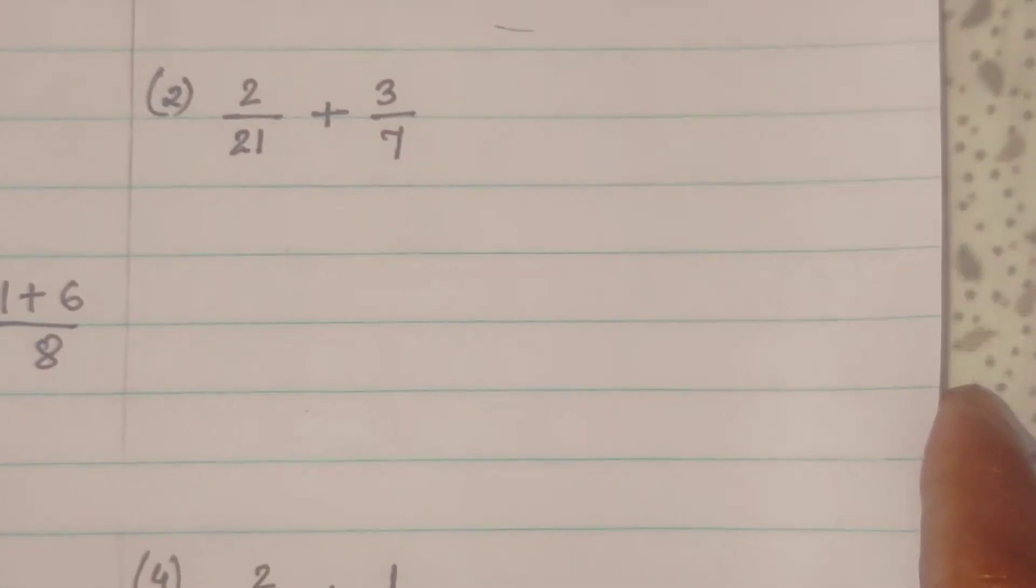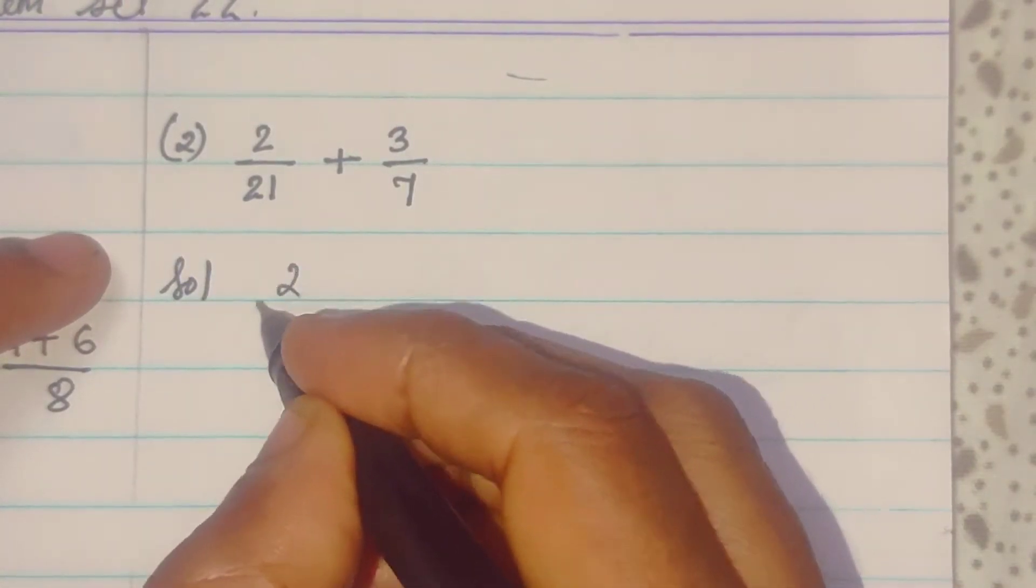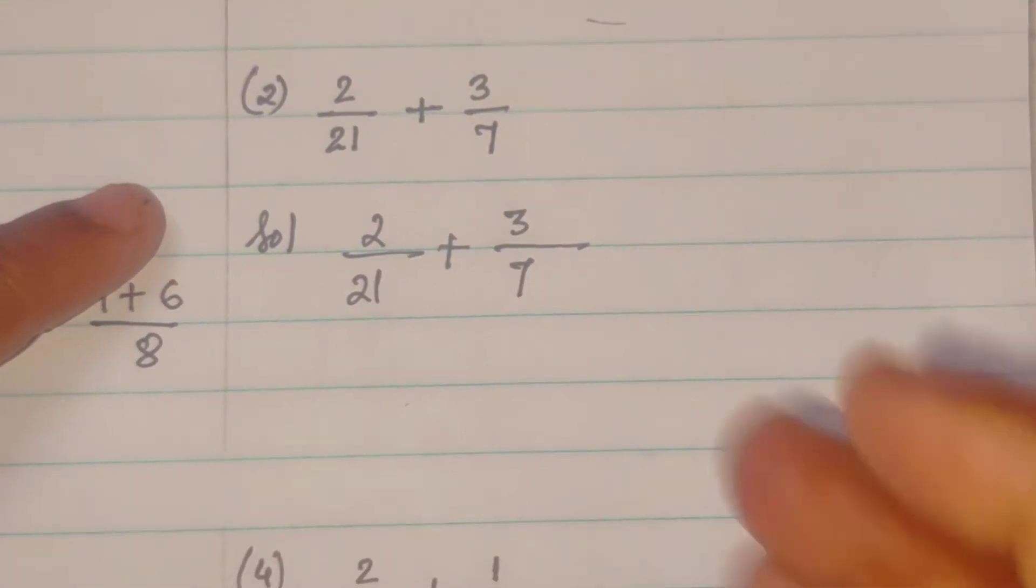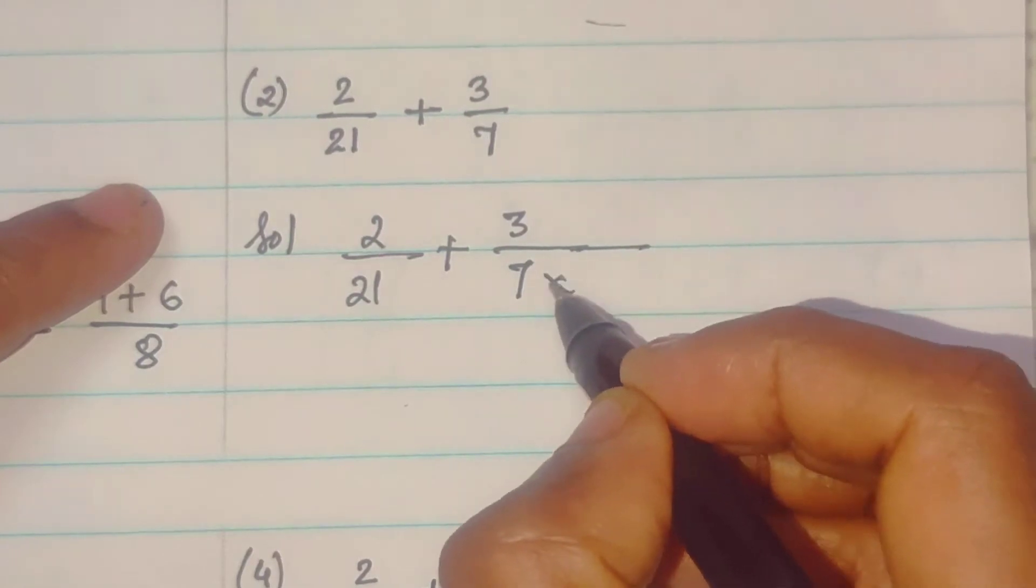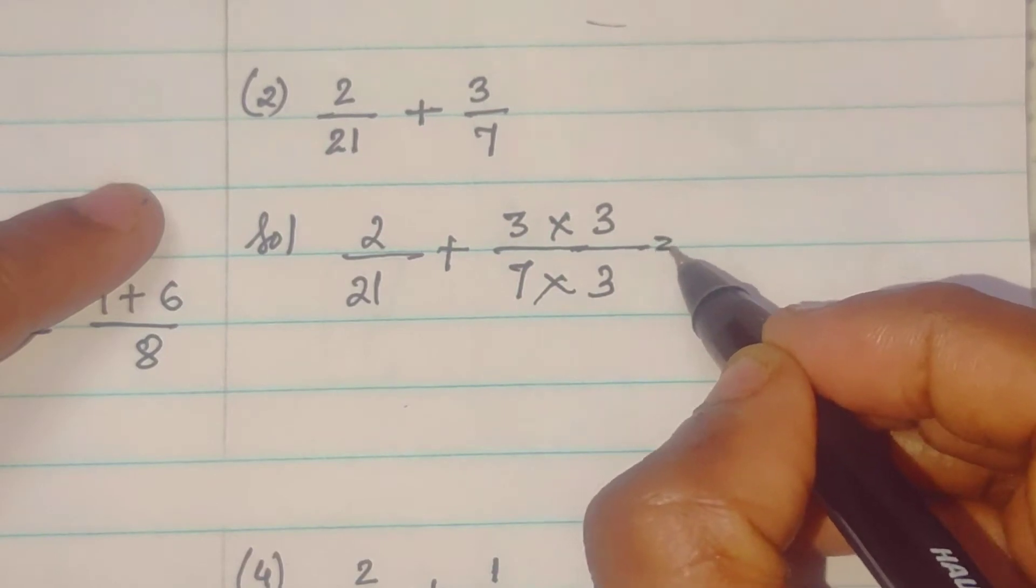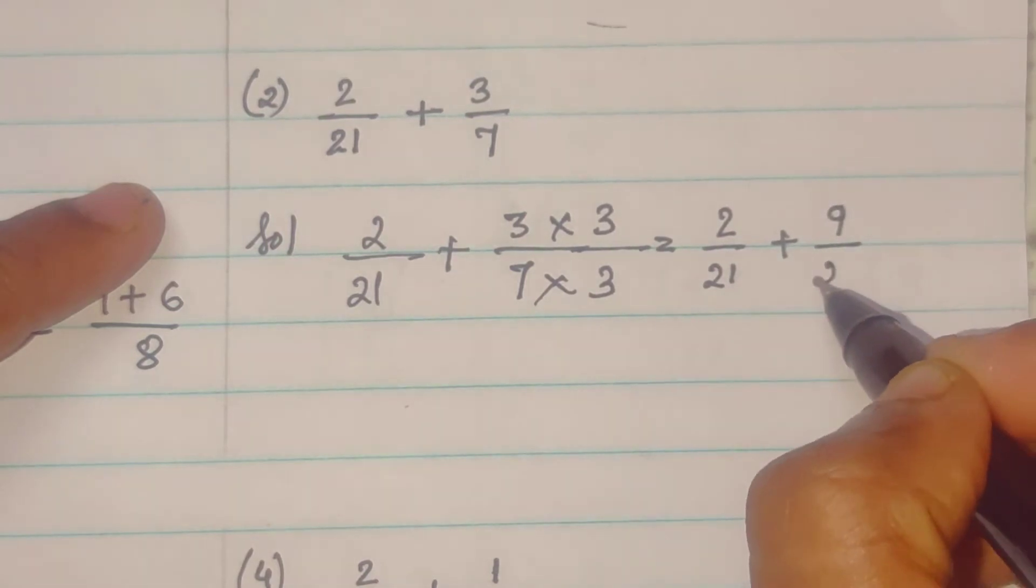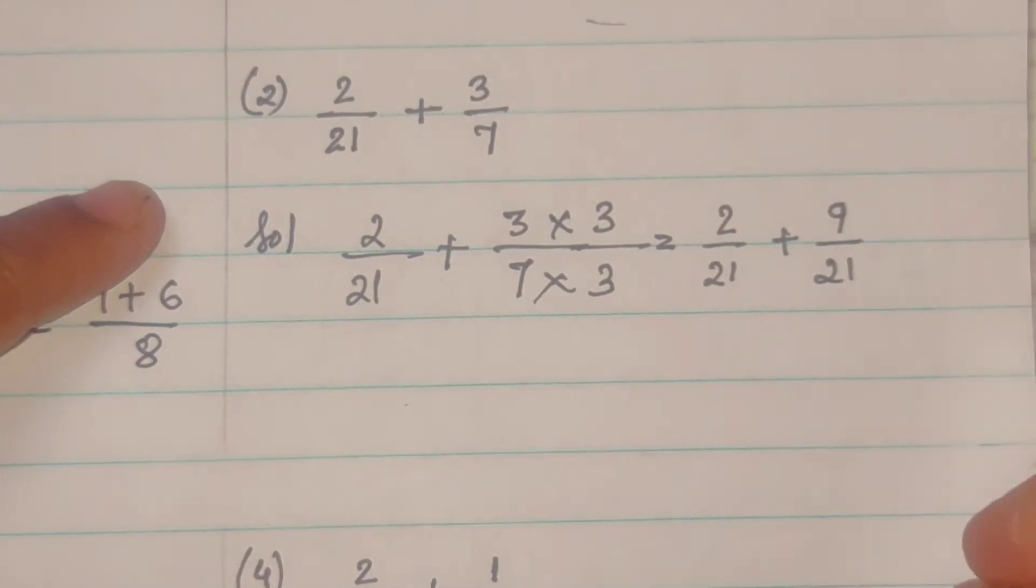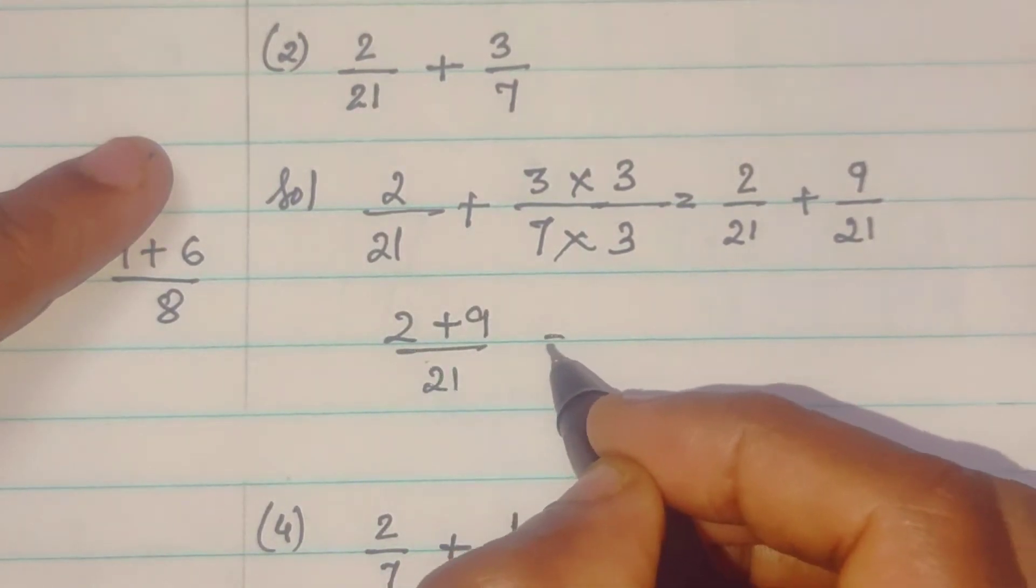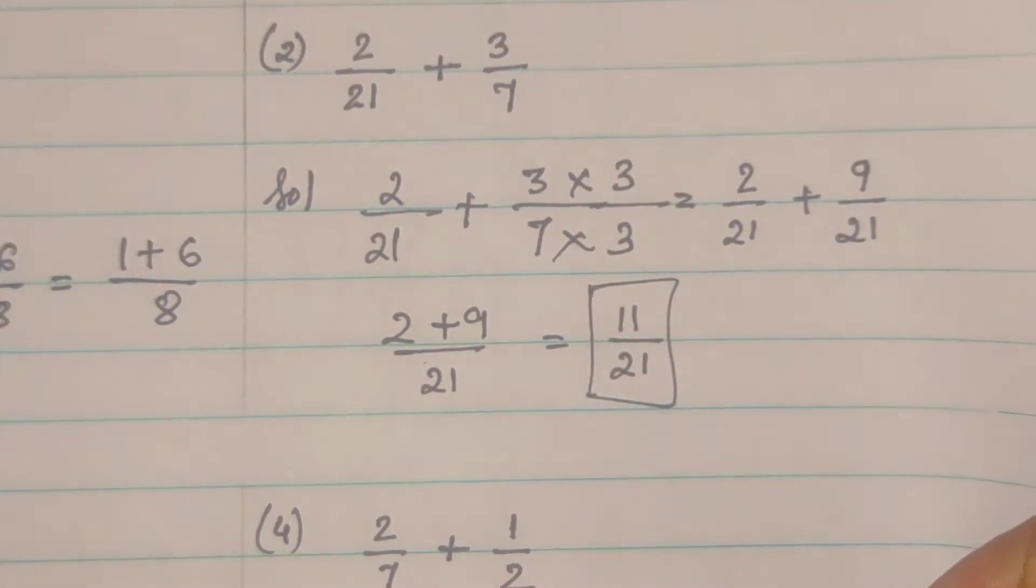Now, second sums. Again, similarly, same you have to do 2 upon 21 plus 3 upon 7. So, to this 7, we can make it 21. 7 ko 21 bana sakteh. 7 thriza. So, 3 thriza. So, 2 upon 21 plus 3 thriza 9. 7 thriza 21. So, that will be equal to 2 plus 9 upon 21. 11 upon 21. So, this is the answer.